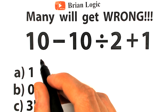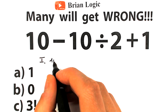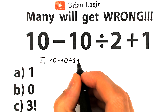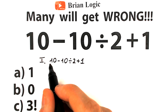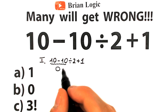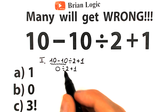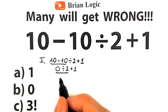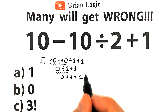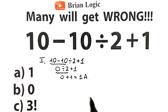I want to start with the first interpretation — take a look closely. We have our challenge: 10 minus 10 divided by 2 plus 1. A lot of students solve this question like this: they say 10 minus 10 on the left-hand side gives us 0, then rewrite the expression as 0 divided by 2 plus 1. From left to right, 0 divided by 2 gives 0, and 0 plus 1 gives 1 — that's option A. A lot of students say option A is the correct answer.